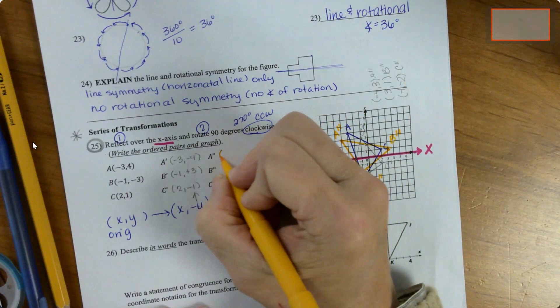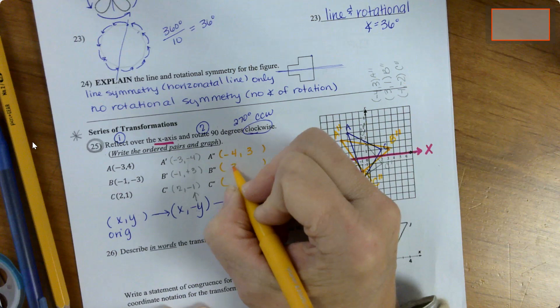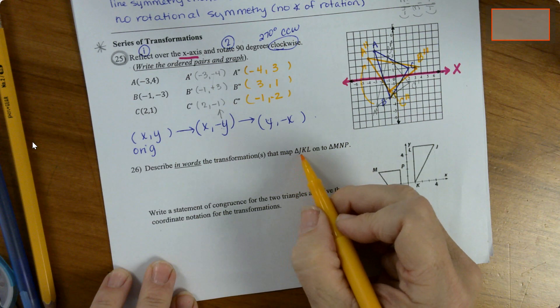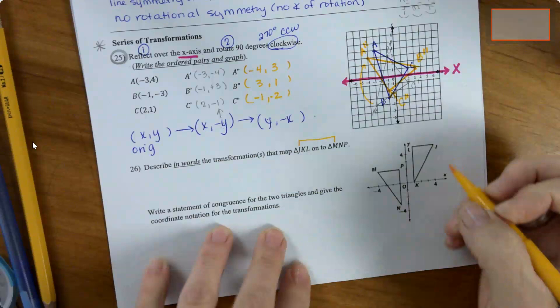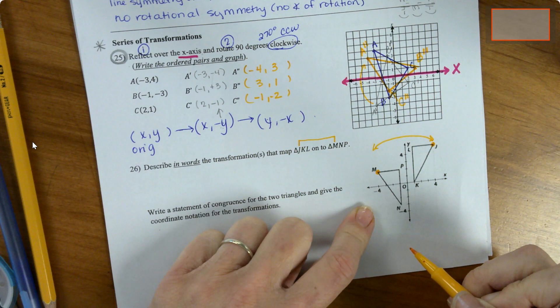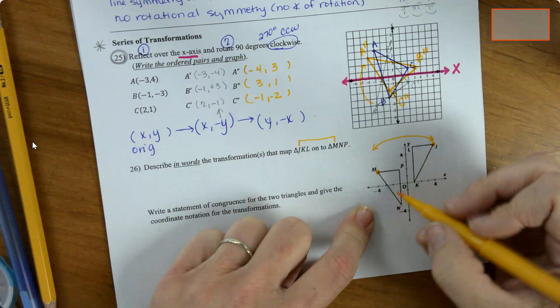Describing where it's the transformation that will map triangle JKL to MNP. So the first thing I need to remember is that J, this point right here, has to become M over there. Well, if I look at that, that looks to me like it's going to have a reflection. And then after a reflection across the y-axis, if I'm going over here, so that's at 4, so it's right here. This would be J prime. This would be L prime. This would be K prime.